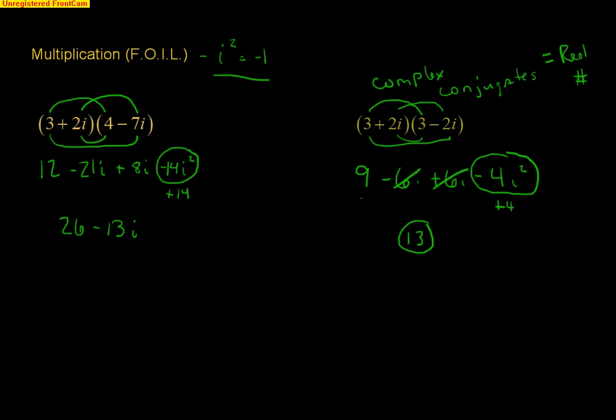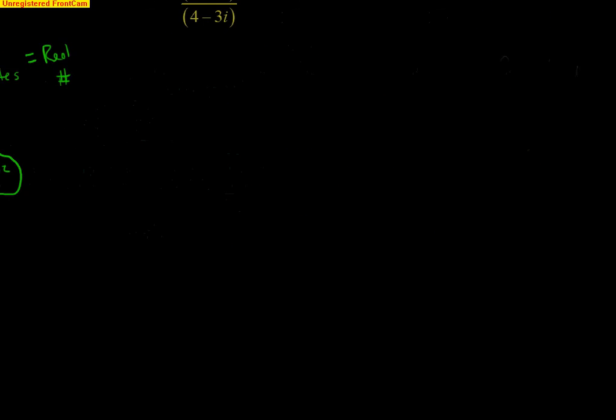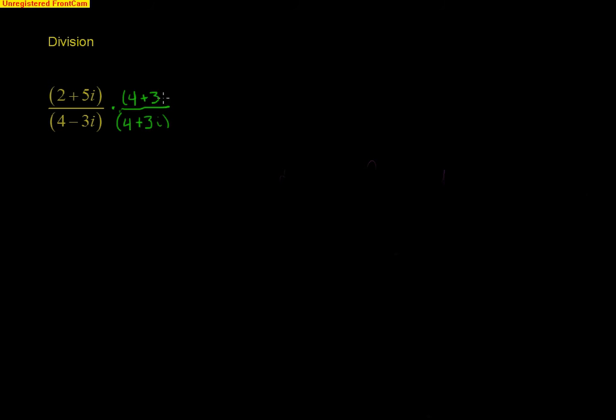So, the last operation we want to look at is division. And, the reason I brought up the conjugates is because when we divide complex numbers, we're going to have to multiply the top and bottom by the complex conjugate of the denominator. So, I'm going to multiply top and bottom by 4 plus 3i. And, we know that on the bottom, we're going to wind up with a real answer.